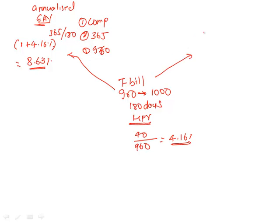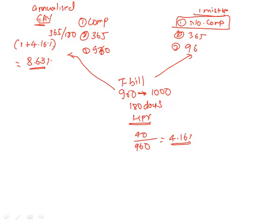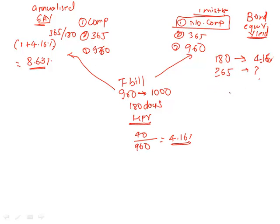Next, annualizing with one mistake — no compounding — while keeping 365 days and 960 as the base gives the bond equivalent yield. Proportionate calculation: for 180 days we earned 4.16%, so for 365 days: 4.16 × (365/180) = 8.44%. This is your bond equivalent yield.